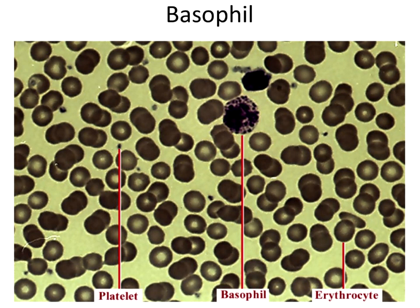The next type of formed element we'll look at is another granulocyte called a basophil. Basophils are really kind of nondescript — they kind of look like somebody stepped on a bunch of grapes. Their nucleus does not have a nice defined bilobed nucleus like the eosinophil we just saw, but it definitely still has all those little granules. The basophil just looks like a bunch of stuff stuffed inside it.